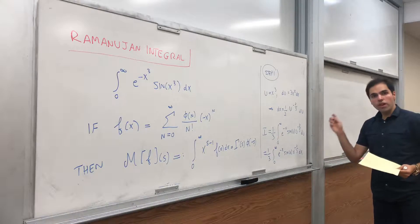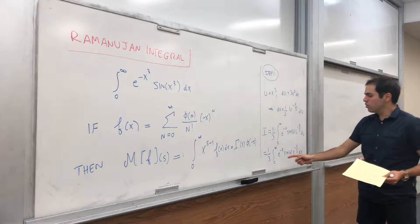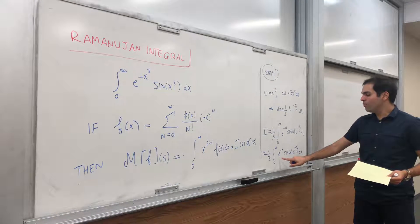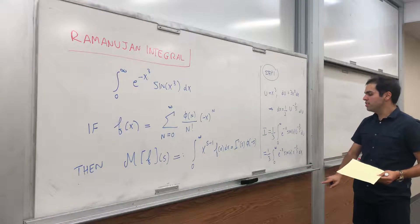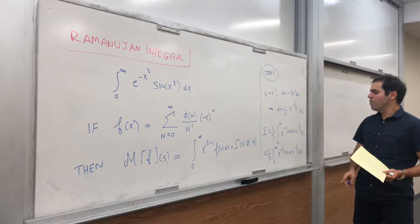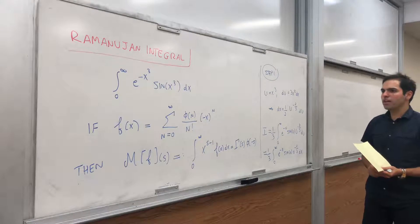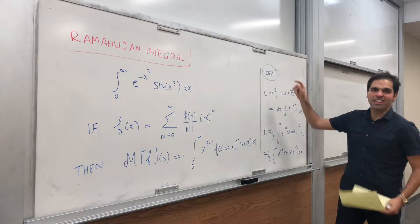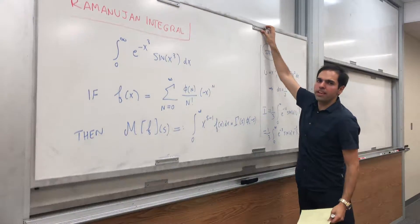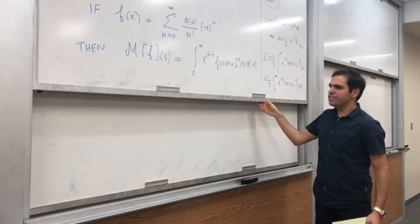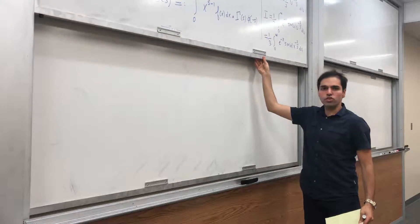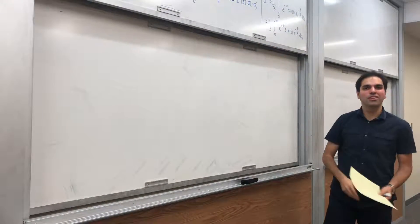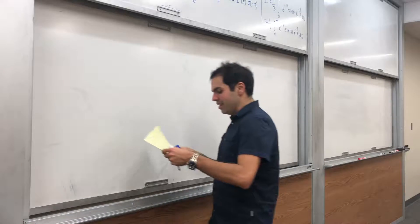Now we want a power series, and you could find a power series of e to the minus x multiplied by the power series of sine of x, but that's way too complicated. Instead, let's just use complex exponentials — it'll be much easier that way.